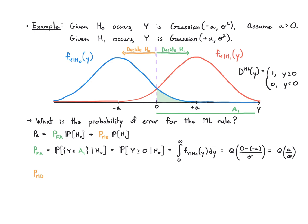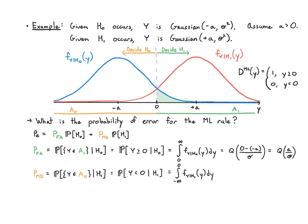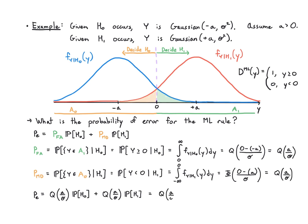The misdetection probability is the probability that y lands in the A0 region given H1, i.e., y less than zero given H1. Integrating from minus infinity to zero gives Φ evaluated at (0 minus a)/σ, which by symmetry equals Q(a/σ). Since both terms equal Q(a/σ) and hypothesis probabilities add to one, the total probability of error is just Q(a/σ) — we don't even need the specific hypothesis probabilities in this special symmetric Gaussian case.